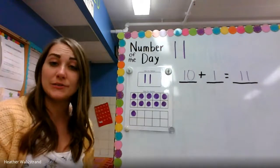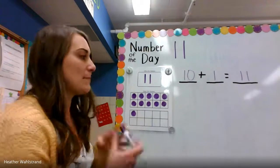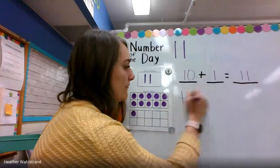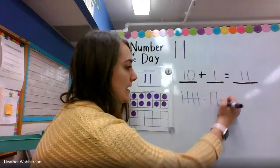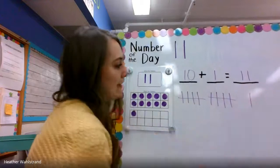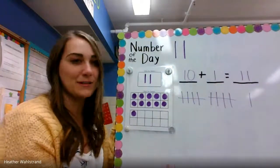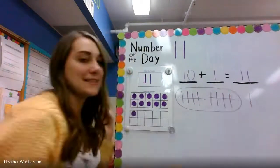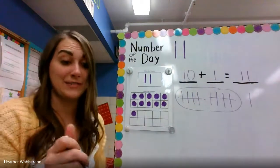We can also show 11 with tally marks. They look like this. 1, 2, 3, 4, 5, 6, 7, 8, 9, 10, and one more would be 11. And whenever I do tally marks, I always like to circle my groups of 10, because that makes it easier for me to count at the end.